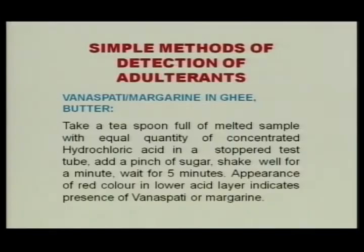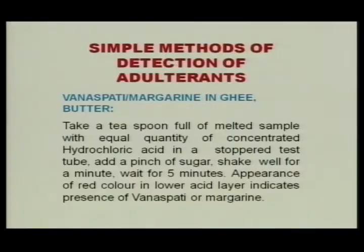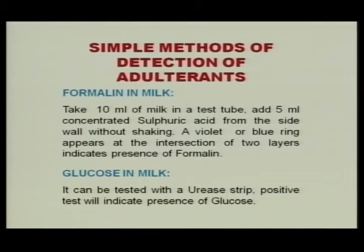Formalin is used for increasing shelf life of milk. To test formalin, take 10 ml of milk in a test tube, add 5 ml of concentrated sulfuric acid carefully from the side — slowly pour it along the side of the test tube without shaking. A violet or blue ring appearing at the intersection of the two layers (acid layer and milk layer) indicates presence of formalin. Glucose can be tested with urea strips or glucose testing strips normally used at home — a positive test indicates presence of glucose.